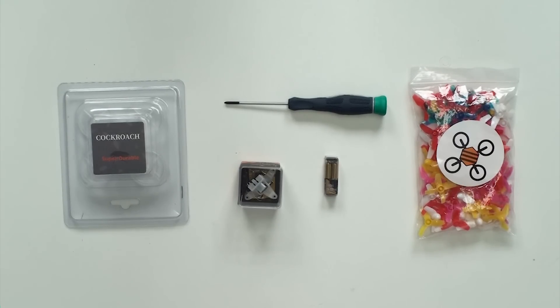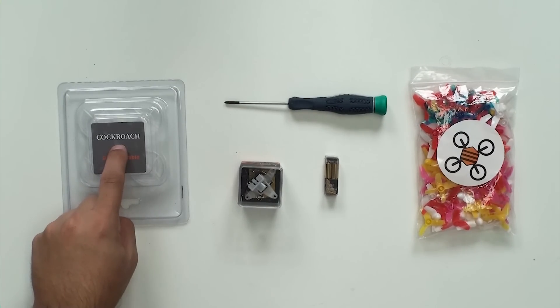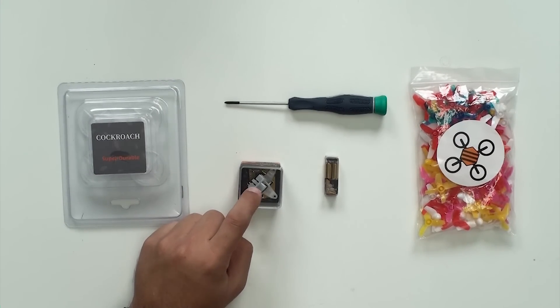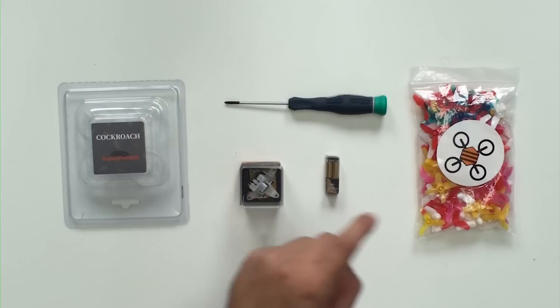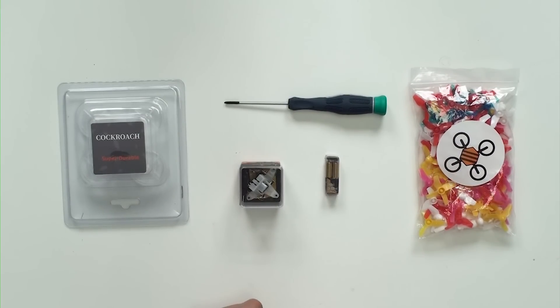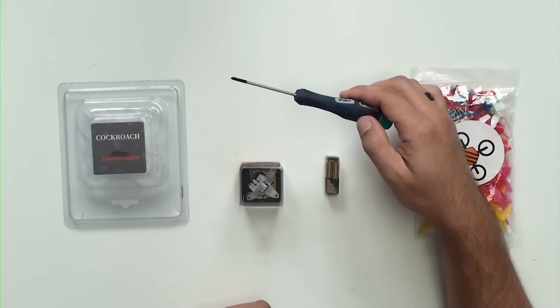Hey guys, today we're going over how to build the BeeBrain V2. We'll be using the Cockroach Frame by NewbyDrone, the NewbyDrone BeeBrain V2 flight controller set, the BDR Gold Motors, and some KingCom props. The only tool we'll need is a small Phillips screwdriver.